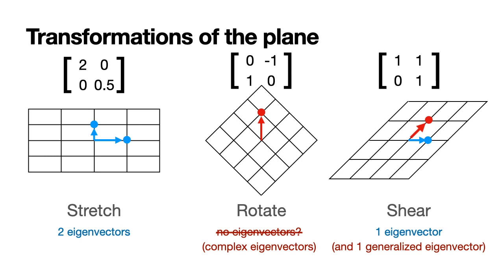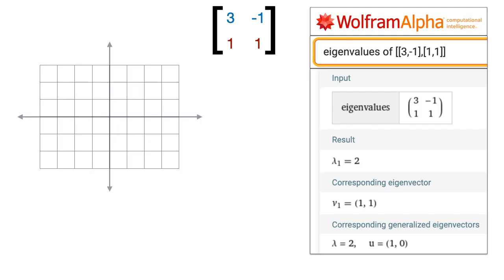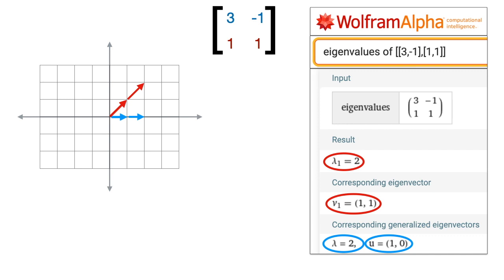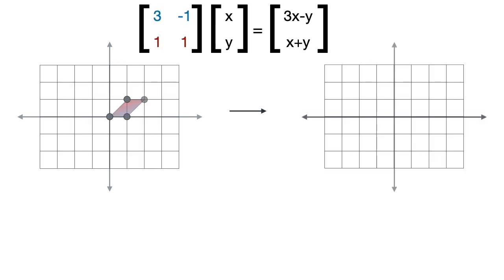These shear matrices are so strange that they actually have a name: defective matrices. If we look at things from the right angle, they don't make life that difficult. Let's look at a defective matrix — for example this one with entries 3, -1, 1, 1. WolframAlpha gives us an eigenvector 1, 1 with corresponding eigenvalue 2, meaning it gets stretched by 2. And a generalized eigenvector 1, 0 with again generalized eigenvalue 2. The matrix sends the vector x, y to 3x - y and x + y.